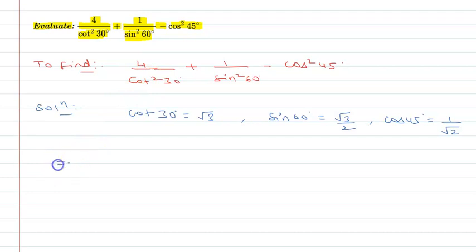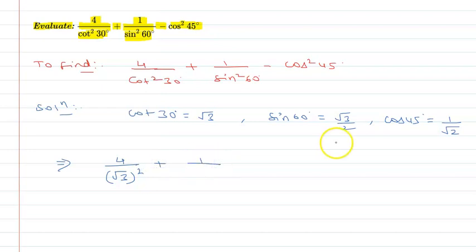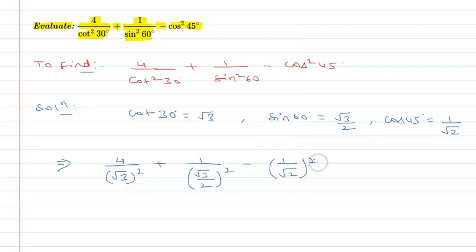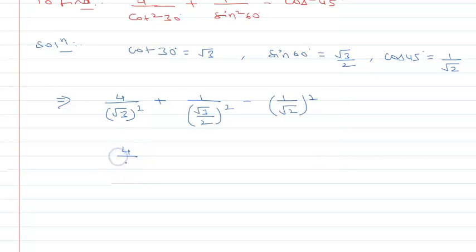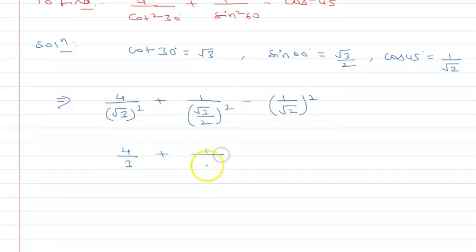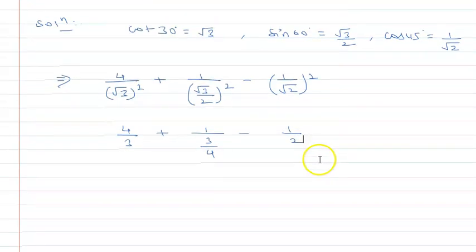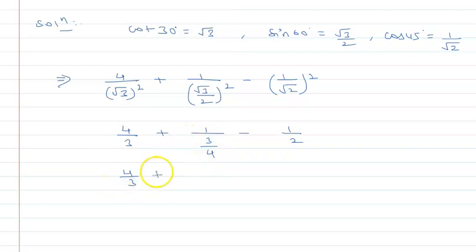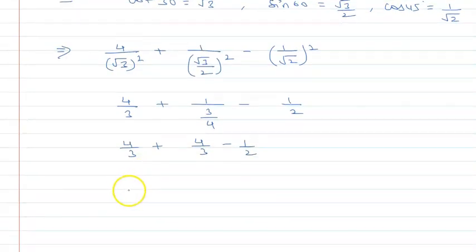Now if I simplify this, this will be 4 upon cot square 30, and root 3 square, plus 1 upon sin square 60, and root 3 upon 2 square, minus cos 45 square. So this will be 4 upon 3 plus 1 upon 3 upon 4 minus 1 by 2, which gives 4 upon 3 plus 4 upon 3 minus 1 by 2.